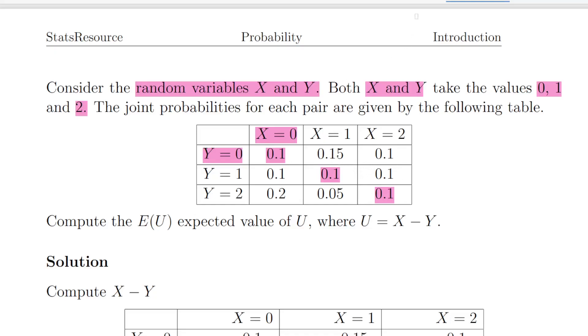Something that you should always do is just check that the totals sum up to 1. The probability of Y equal to 0 is 0.35. The probability of Y equal to 1 is 0.30, and 0.35 for the probability of Y equal to 2, and that sums up to 1. That's good. So we should always check that.